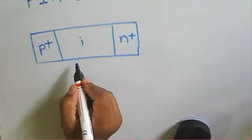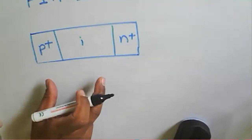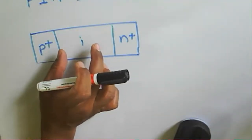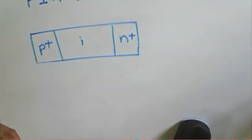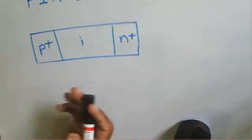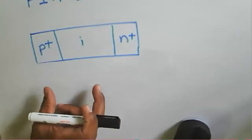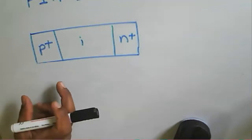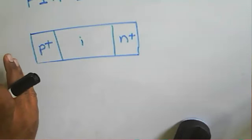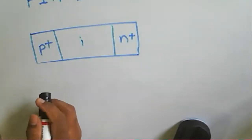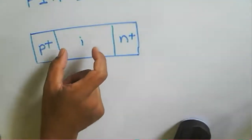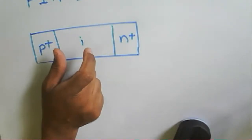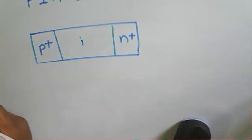A wide intrinsic region produces a high breakdown voltage, a low transition frequency, and high junction resistance. High junction resistance requires a large bias voltage. A large I region means larger area, which increases power handling capacity but also produces a larger junction capacitance, narrower circuit bandwidth, and lower diode cutoff frequency.